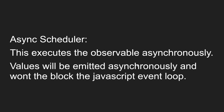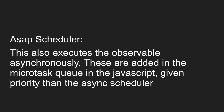Whenever the event loop stack is empty, the event loop will push the task into the executable stack. Now another one is the ASAP scheduler. The ASAP scheduler also executes the observable asynchronously, but these tasks are added in the microtask queue in the JavaScript event loop, giving them higher priority than the async scheduler.